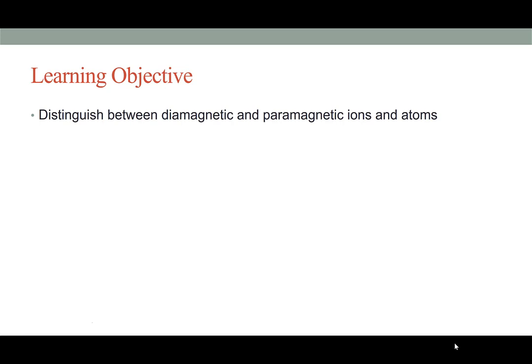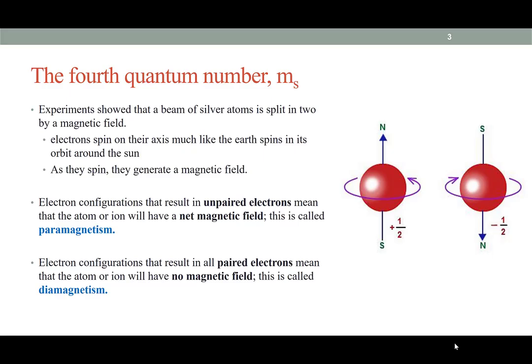We'll learn the definitions of these terms and the property of paramagnetism. This property relates to the fourth quantum number, which you'll recall is called the spin quantum number. This quantum number deals not with the orientation or location of an electron around an atom, but with a property of the electron itself.